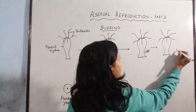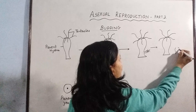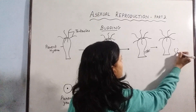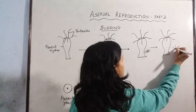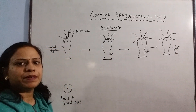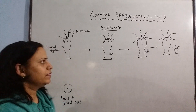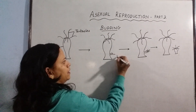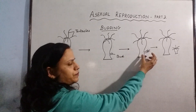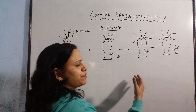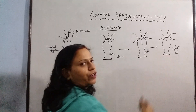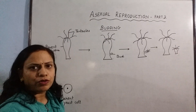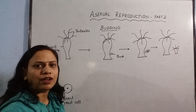This is the daughter hydra that has been formed. So to recap: in a parent hydra, a small outgrowth is formed which is called the bud. This bud develops into a small organism which has all the features of the parent organism. Finally, when it is fully mature, it separates from the parent organism and forms a daughter organism — a mini hydra — which again undergoes growth, development, attains adult size, and the cycle of reproduction continues.